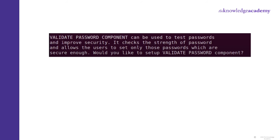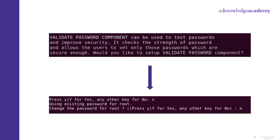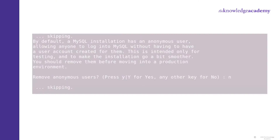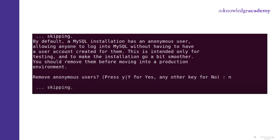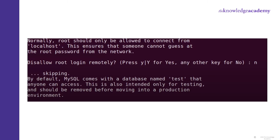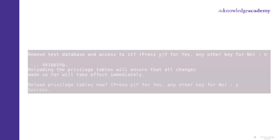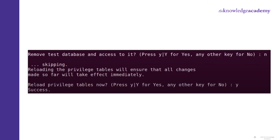Once this is done, there will be a series of questions that appear in the terminal. First, it will ask if you would like to set up the Validate Password component — for Yes, put Y; for No, press any key. Again, it will ask if you would like to change the password for root — go with N. Now it will ask if you want to remove anonymous users — press N and proceed. Now it will ask whether to disallow root login remotely — again go with N. Now it will ask if you want to remove the test database and access to it — again press N and proceed.